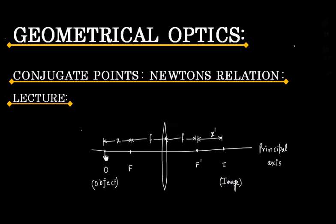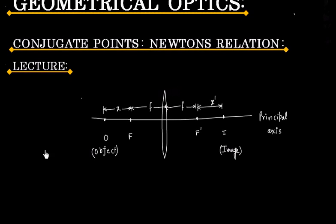So if I have object here, I will have image here, and if I have object here, I will have image here. This is because rays are reversible.